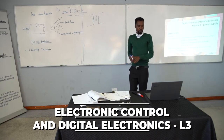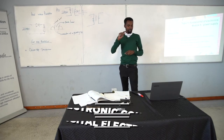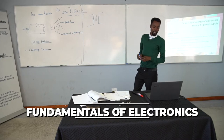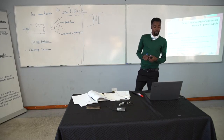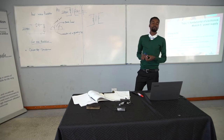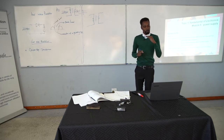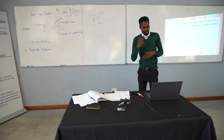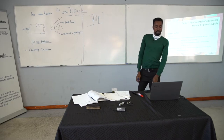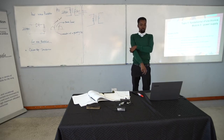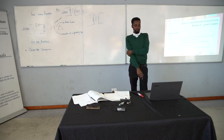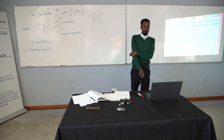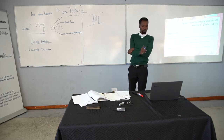Moving to the full wave rectifier. There are two methods of achieving full wave rectification: number one, we have a center tap transformer; number two, we have a bridge rectifier. A center tap transformer is equivalent to two secondary windings, with each secondary winding providing half the voltage. The voltage across each secondary winding is used for the rectifier supply, and we use two diodes.